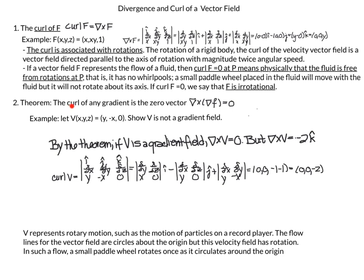When we calculate the curl of v — using the ijk determinant with d/dx, d/dy, d/dz and v = (y, -x, 0) — we get a non-zero value, meaning there is some rotation. So by the theorem that the curl of any gradient is the zero vector, this non-zero curl cannot equal the curl of some gradient function, because if v were the gradient of some function then the curl would equal zero by this theorem.